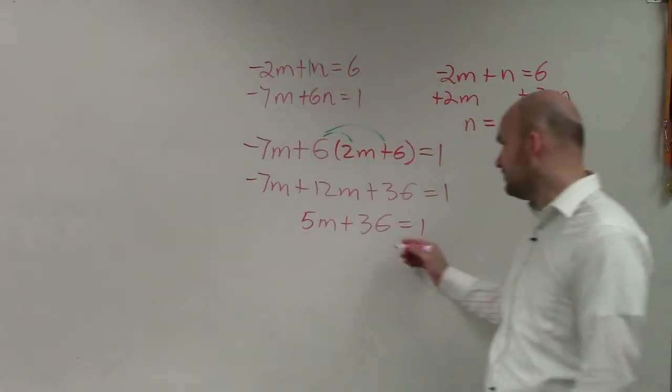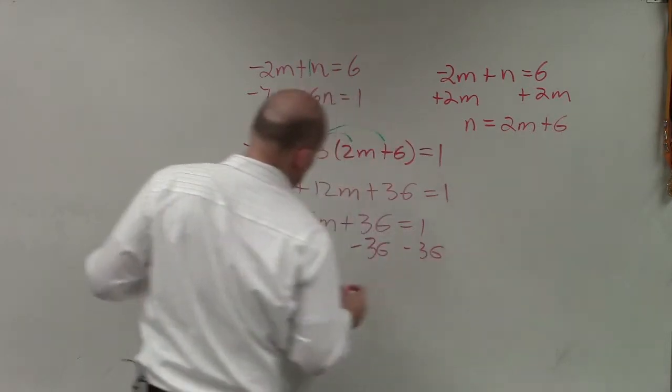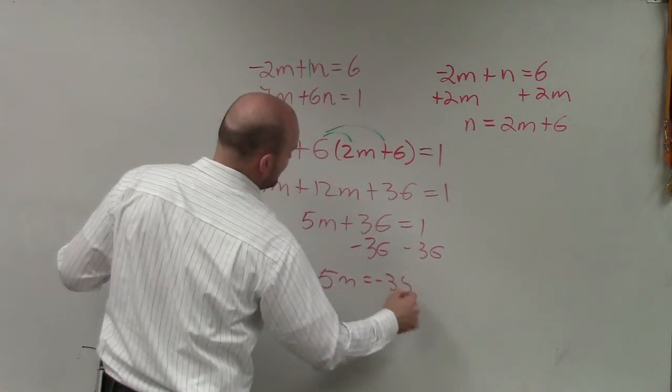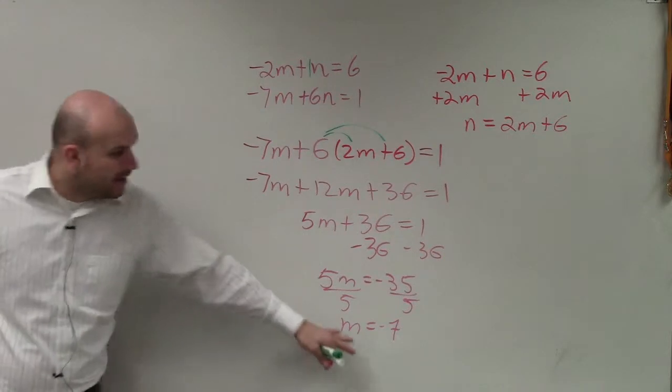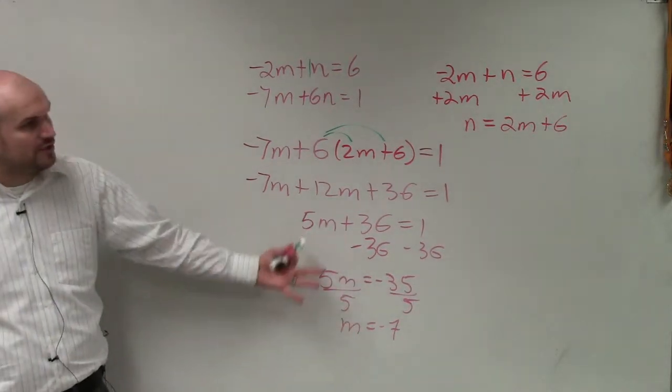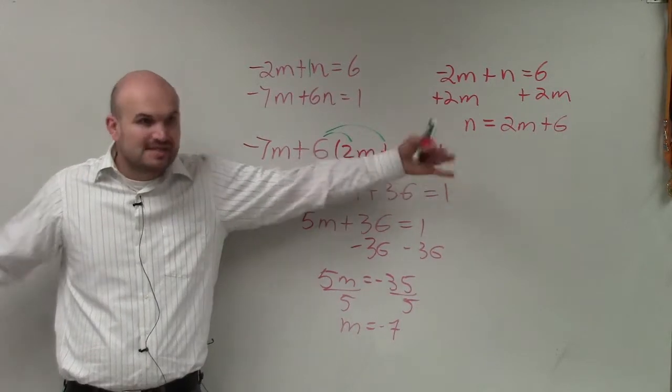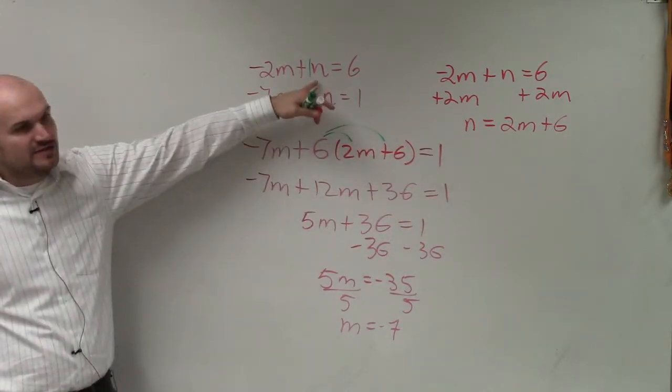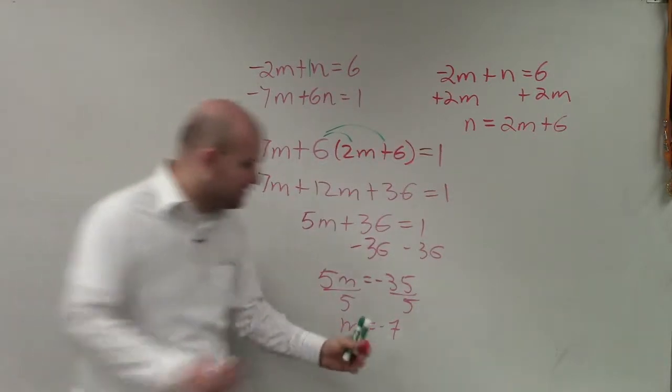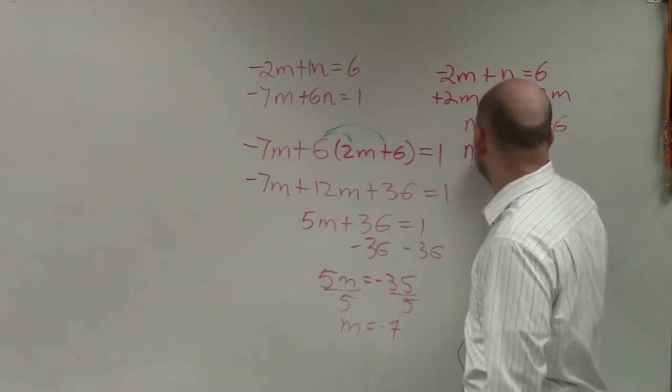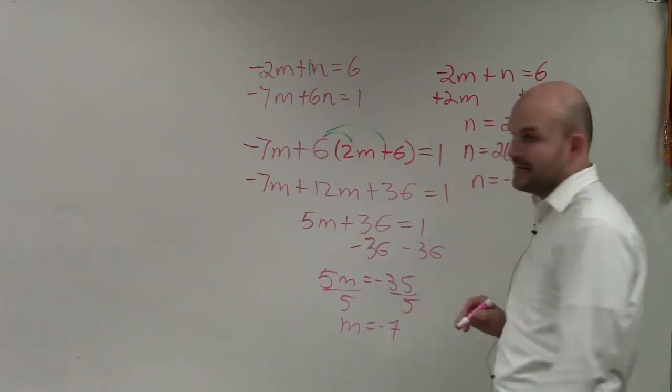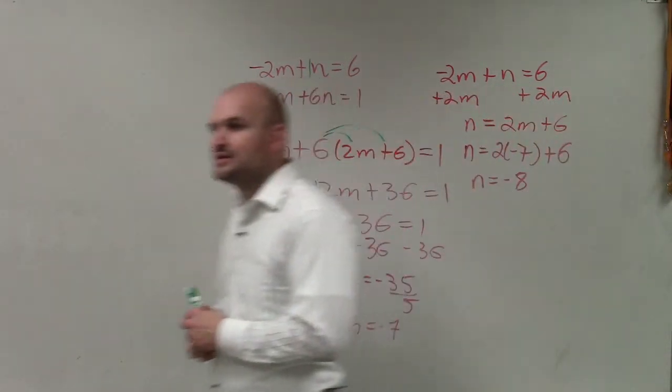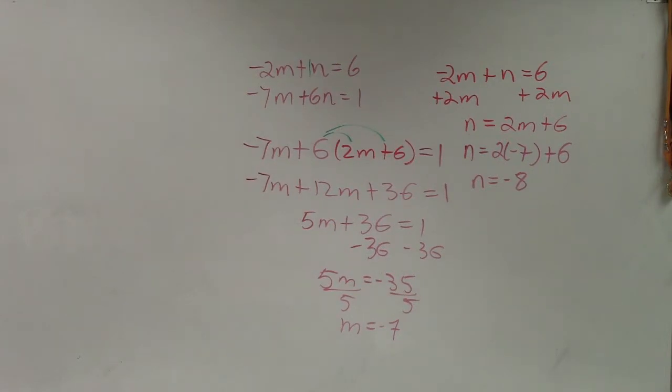Now, we can solve for our variable. So I subtract 36, and I have 5m equals negative 35. Divide by 5, divide by 5, m equals negative 7. Now, I know what the value of m is. So to find the value of n, I've already solved for n. That's what's nice about this process. So when you have a variable coefficient of 1, you solve for it. Now, you already have one solved. So now, to find the value of n, I just take n equals 2 times negative 7 plus 6. n equals negative 8. So now, I know what the value is of negative 8 as well as negative 7. So am I... Oh, she's coming... Roger. Thank you.